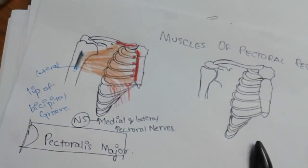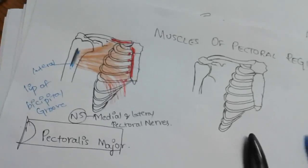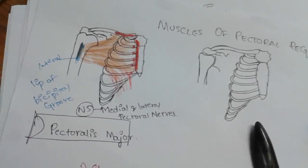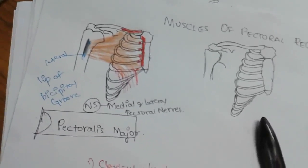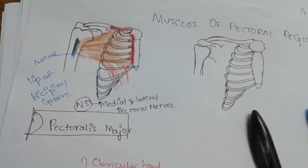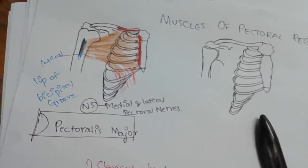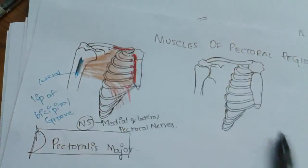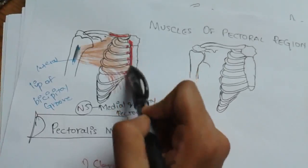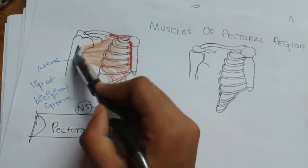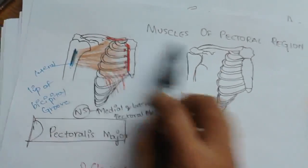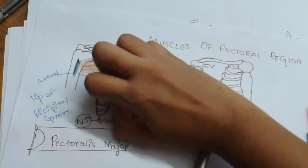Now let us look at the action of pectoralis major — it is the most important muscle. The origin is here and the insertion is here. When the muscle contracts, the humerus moves towards the midline of the body.